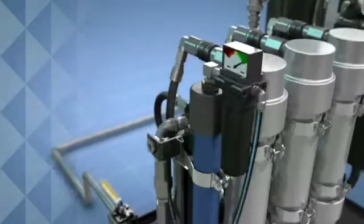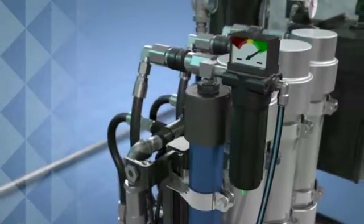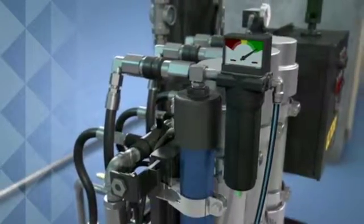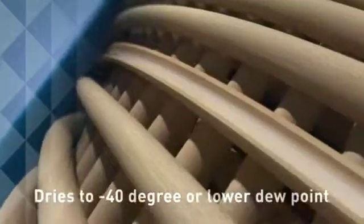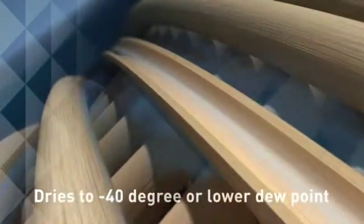Plant air enters the coalescing element to remove liquid, aerosols, water, oil and submicron particulates from the airstream before passing through the membrane air dryer. Here it reaches extremely dry levels of minus forty degree or lower dew point.